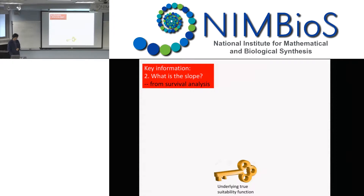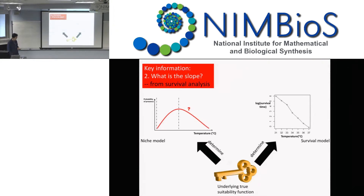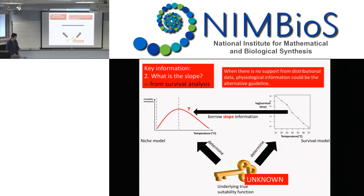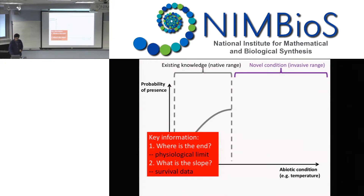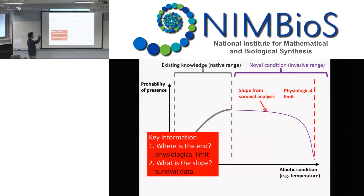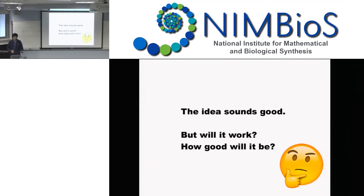This is under a key assumption: there is a true underlying suitability function — how species respond to their environmental condition — and this function will ultimately determine both the probability of presence and survivorship. Given that I don't know this golden standard, it's probably reasonable to use the known things from survivorship analysis, taking that slope and migrating it to the ecological niche model. So we know the limits, we know the curve slope, and then probably we can do a better job at this extrapolation.